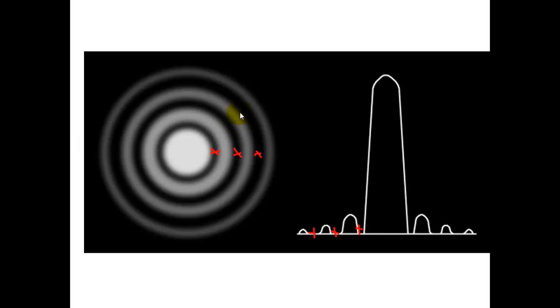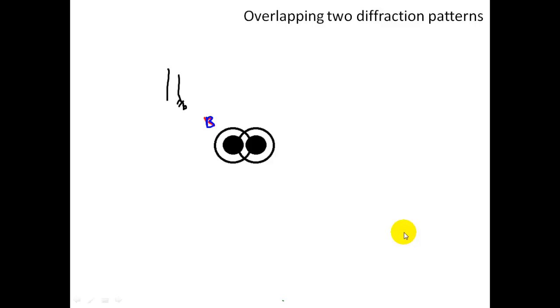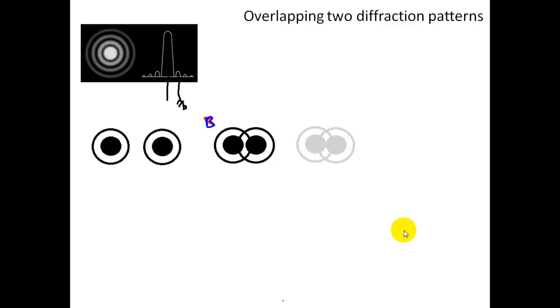So this is that from there to there is theta, so the sine of theta is equal to lambda over b. Now we have different images here. Which ones can be distinguished?